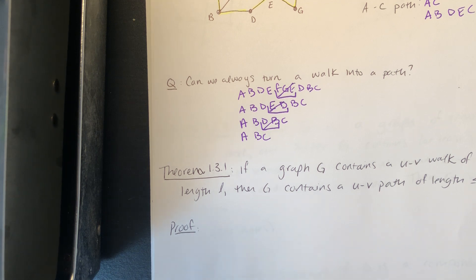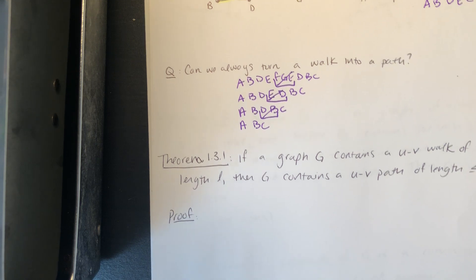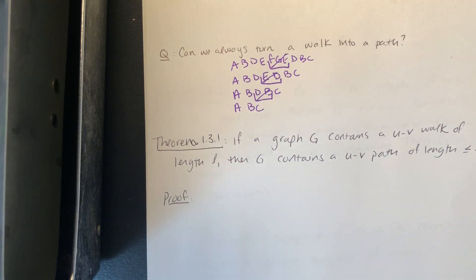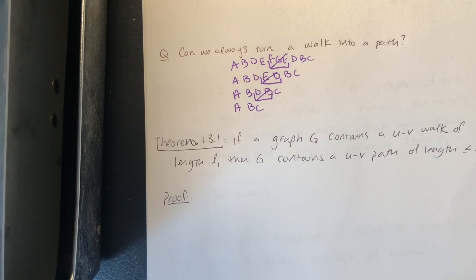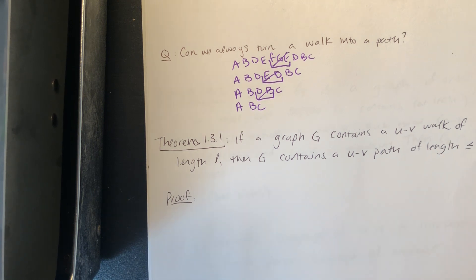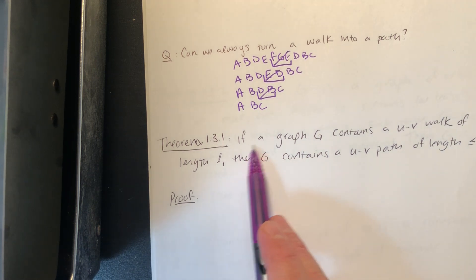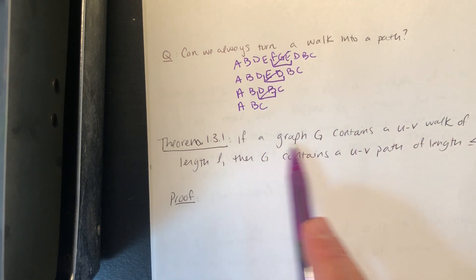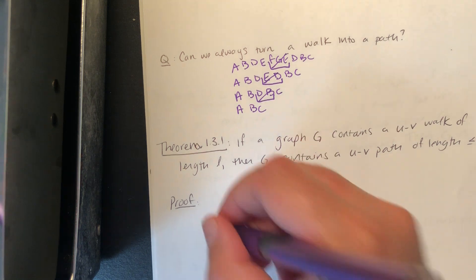Theorem 1.3.1 states: if a graph G contains a walk from u to v of length l, then G also contains a u-to-v path of length less than or equal to l. The path length is equal to l if the walk is already a path, and strictly less otherwise. To prove this, assume that graph G contains a u-to-v walk of length l.